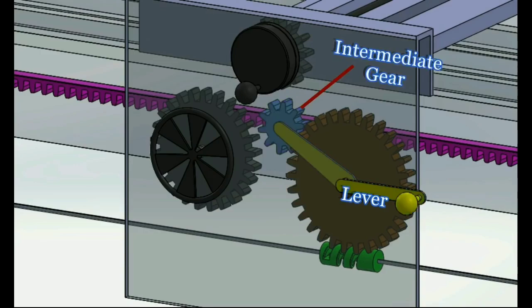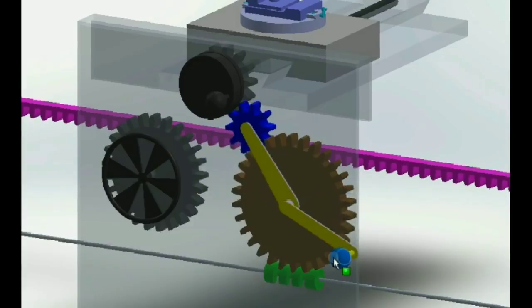This lever is used to move the intermediate gear so as to either provide the power feed or power cross feed or neither of them.